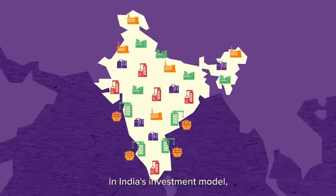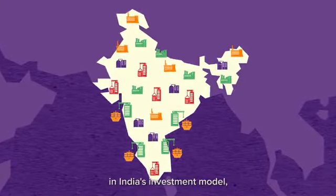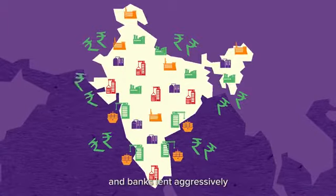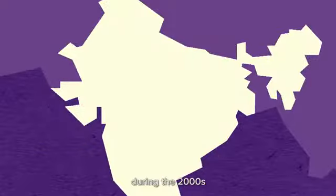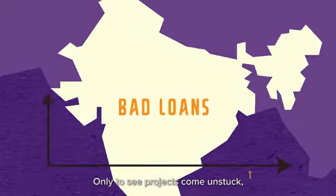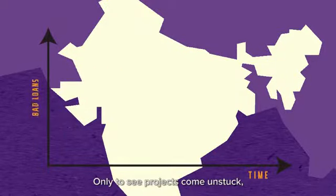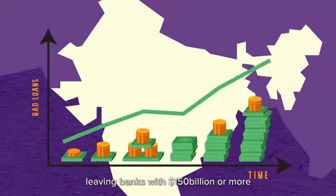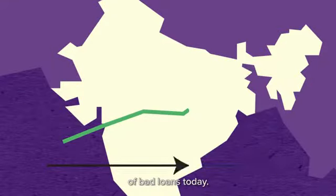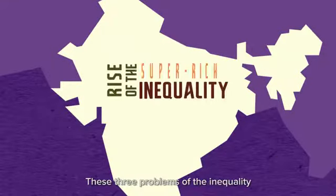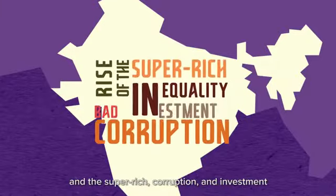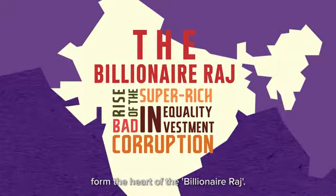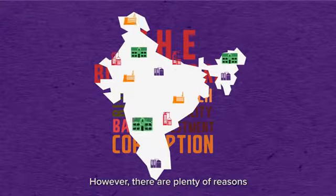Finally, the last two decades revealed a third problem: a boom-and-bust cycle in India's investment model, as billionaire tycoons borrowed recklessly and banks lent aggressively during the 2000s, only to see projects come unstuck, leaving banks with $150 billion or more of bad loans. Today these three problems — inequality and the super-rich, corruption, and investment — form the heart of the billionaire Raj.